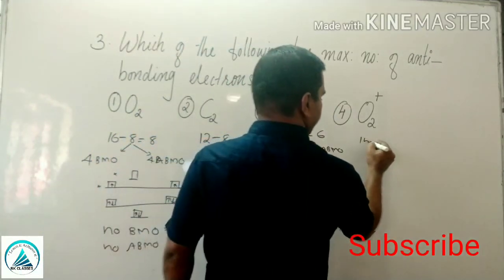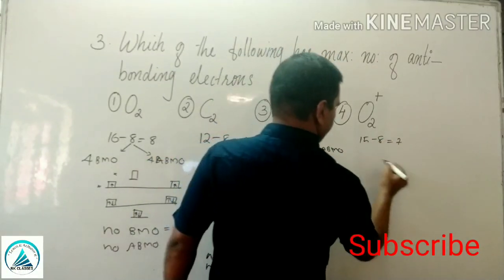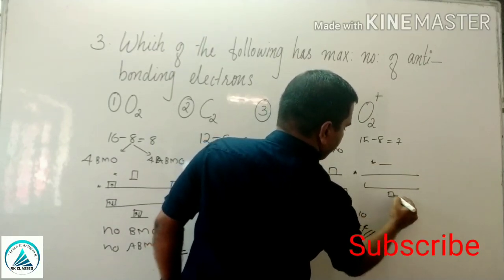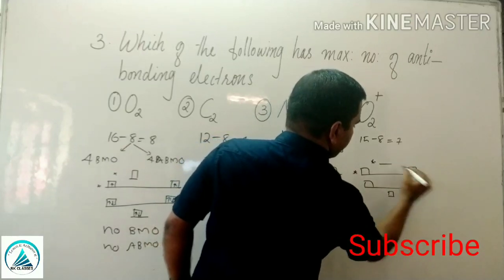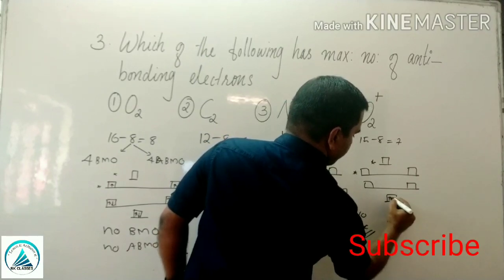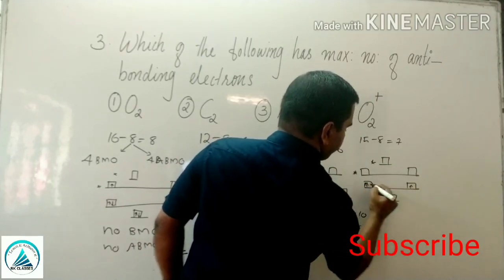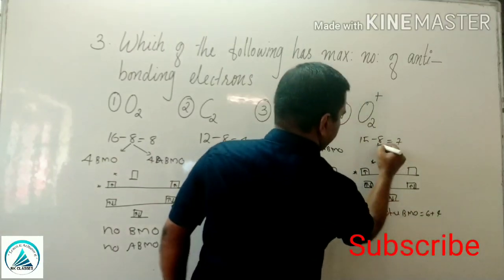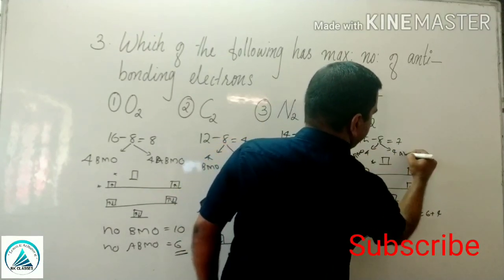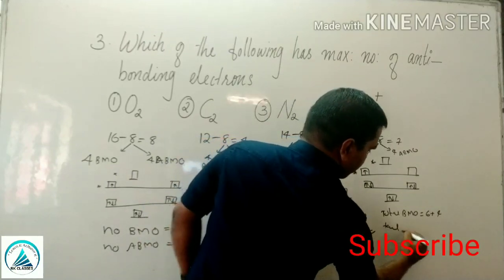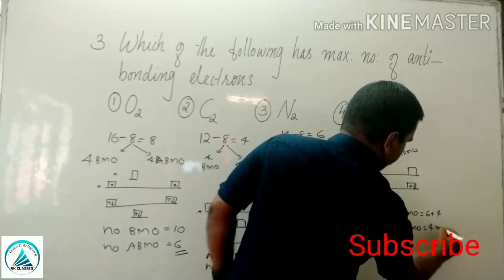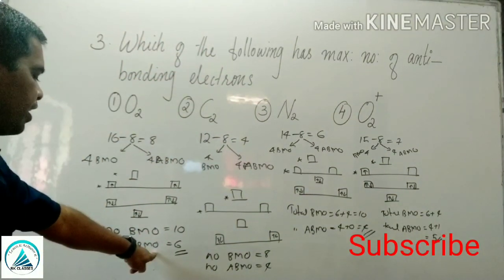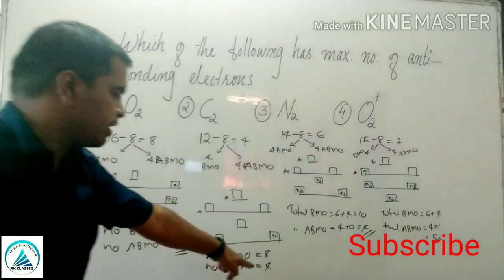O2 plus has 15 electrons total, 15 minus 8 = 7 remaining. Since greater than 14, use the pattern: small line, big line, big line, small line — these two are anti-bonding orbitals. Distribute 7 electrons: 1, 2, 3, 4, 5, 6, 7. Total BMO = 6 plus 4 = 10, total ABMO = 4 plus 1 = 5. So: O2 has 6 anti-bonding electrons, C2 has 4, N2 has 4, O2 plus has 5.